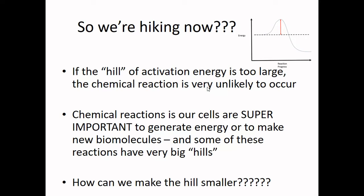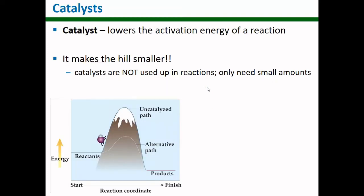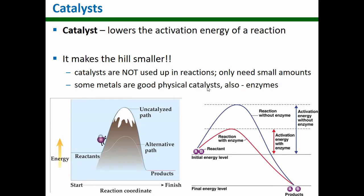If that hill is too big, then a chemical reaction is really unlikely to occur. Chemical reactions in our cells are very important, so our cells have developed ways to make that hill smaller so that it can be climbed easier. Something that lowers activation energy is called a catalyst — it makes the hill smaller. Metals are good catalysts, but what we're going to talk about is enzymes.